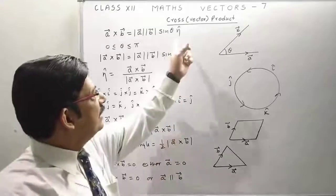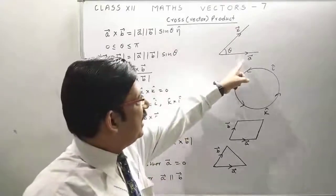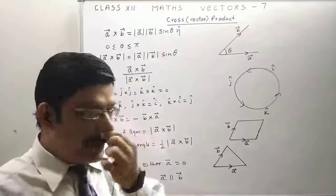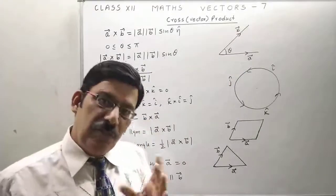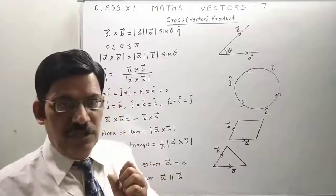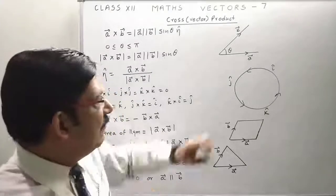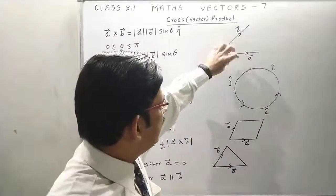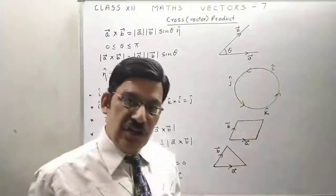What is the direction when we take a cross B? The direction will be perpendicular to both the vectors, or perpendicular to the plane which contains a and B. You can find this by the screw rule. When you turn a screw like this, a cross B, it will come out. Therefore, the direction of a cross B will be outwards.